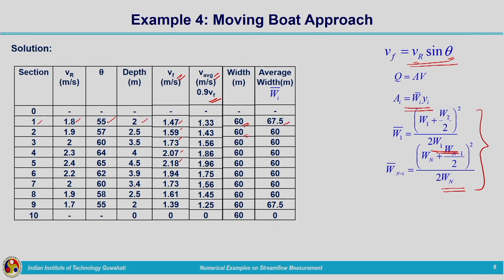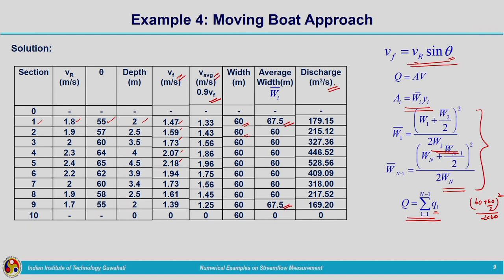Total discharge Q = Σqᵢ for i = 1 to n−1, where qᵢ is the discharge through the ith segment. Discharge through each segment is computed and listed in a column. Total discharge is calculated by summing these values, giving 2810.52 cubic meters per second.